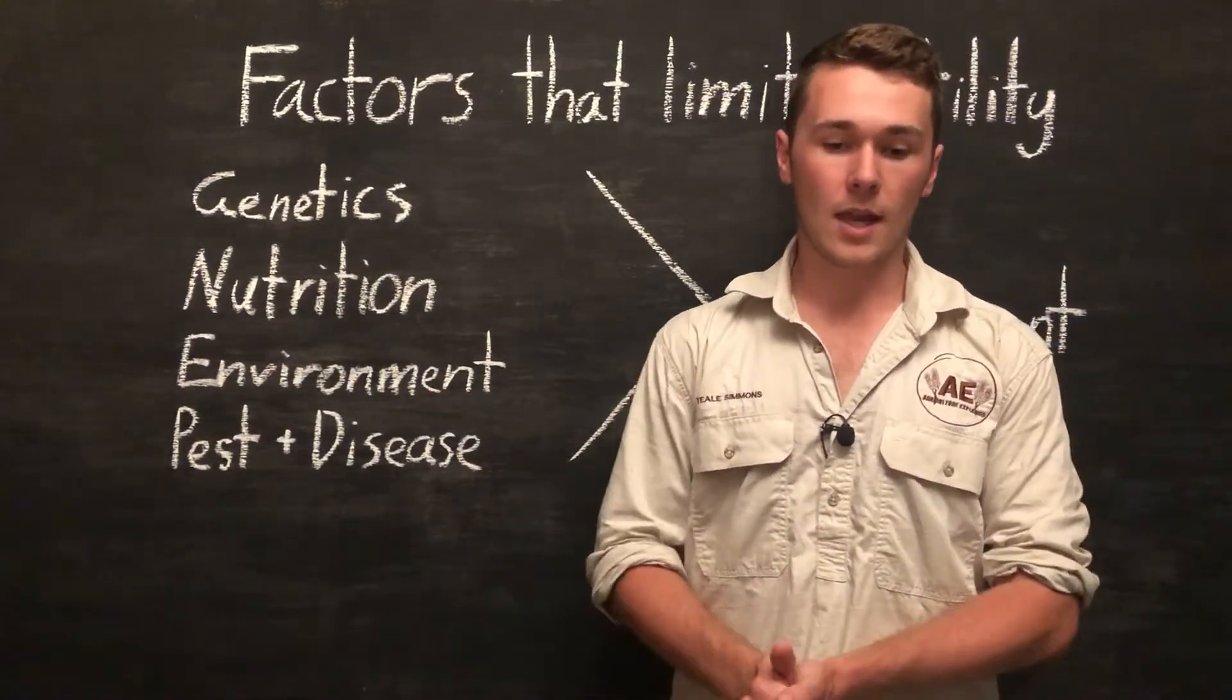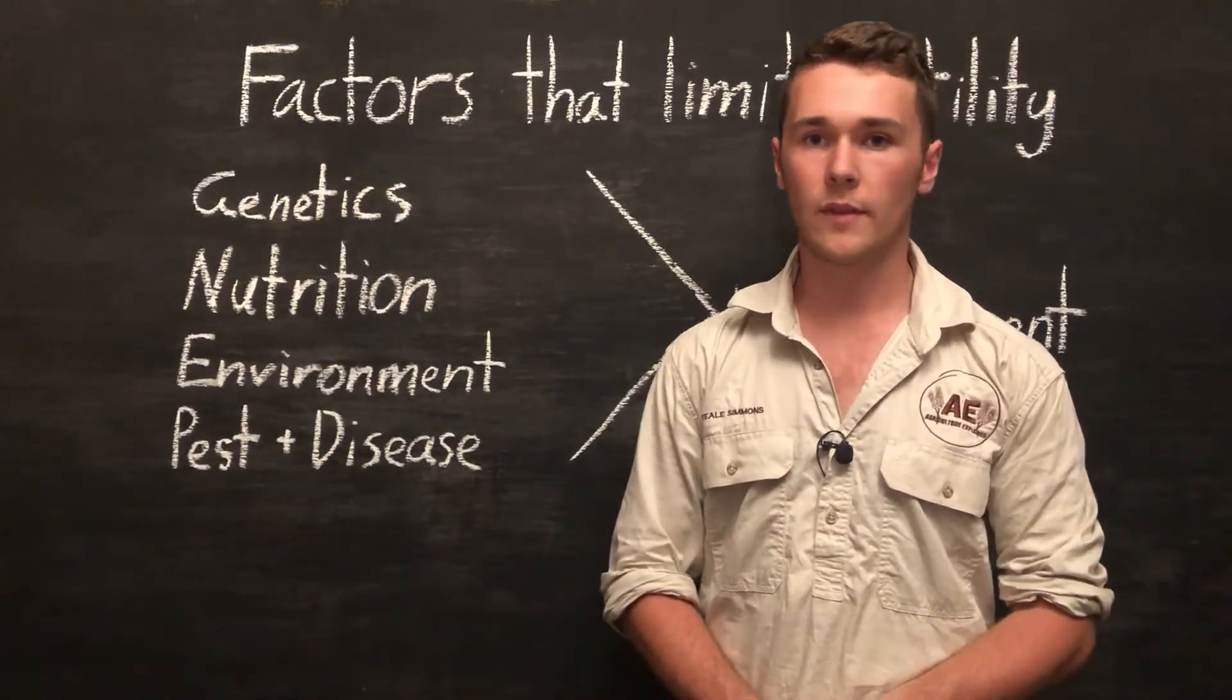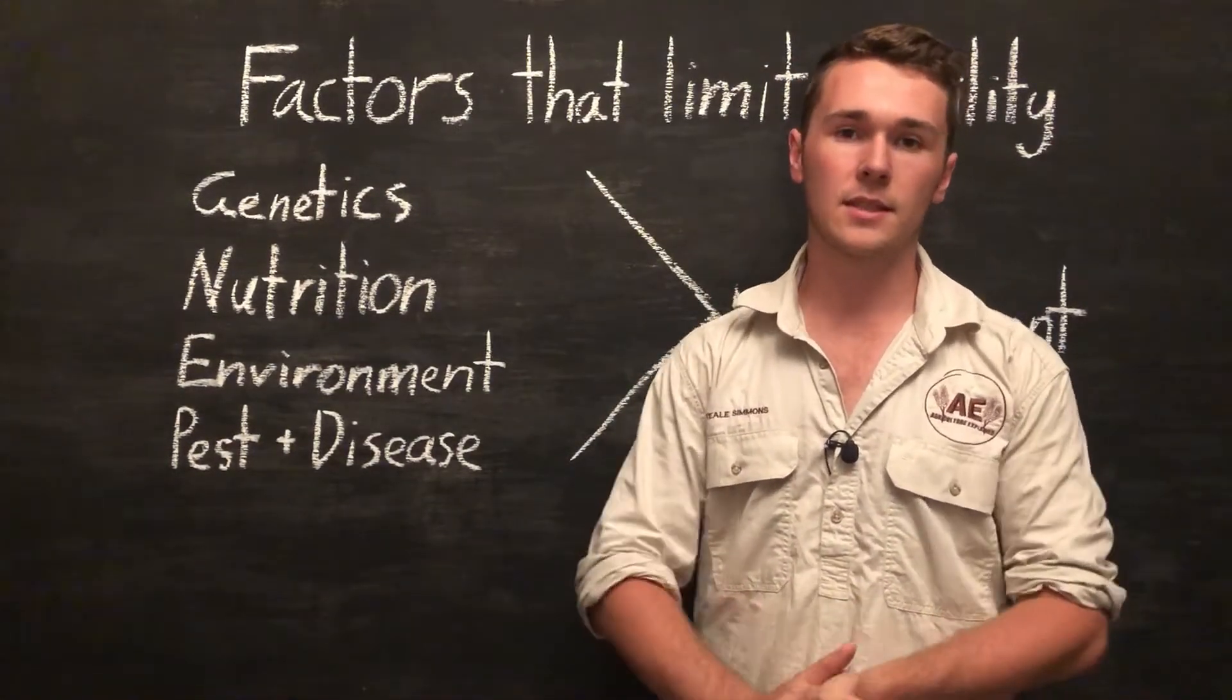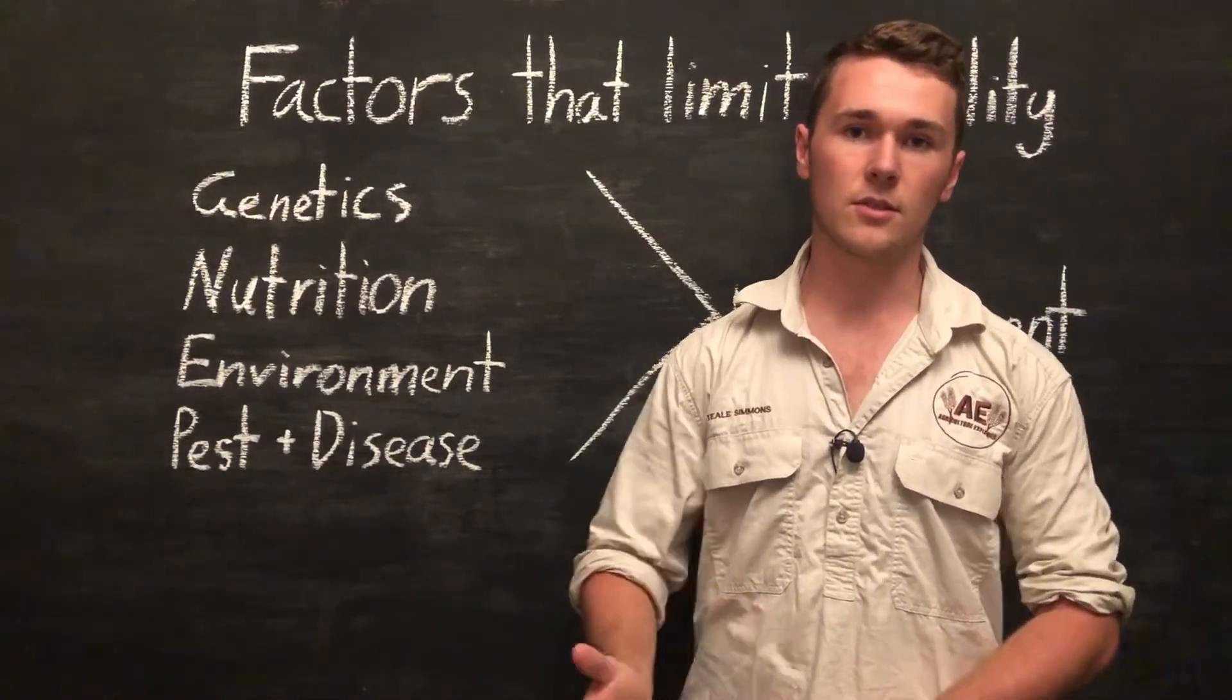But another way we can overcome them is to ensure that we get a breed of animal that is well suited to the climate of our area. So for example, those Bos Indicus cows are really suited to tropical hot environments such as Northern Queensland.